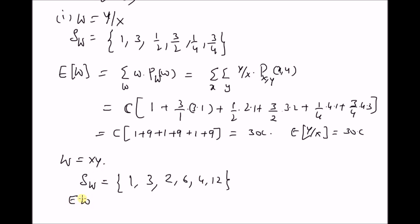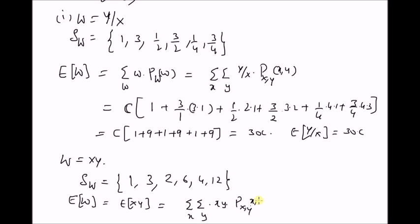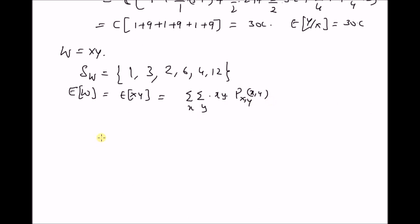The expected value of W, that is E[x·y] — which is also the correlation of the random variables x and y — equals the summation over all values of x and y of the product x·y times the joint probability mass function P(x, y). Using the definition of the joint PMF, this equals C times the summation over all values of x and y of (x·y)².